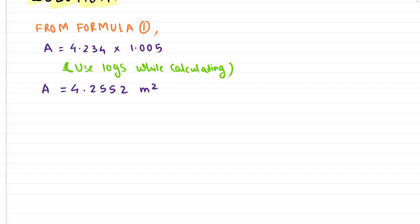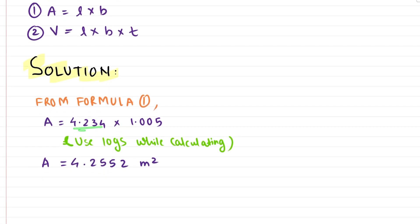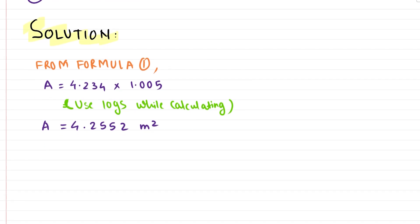Area is a derived quantity, and its significant figures depend on the input quantities. Since we are using multiplication, the rule is that the result should have the same number of significant figures as the quantity with the least significant figures among those multiplied. Length has 4 significant figures and breadth also has 4 significant figures — both are equal, so we express the area in 4 significant figures.